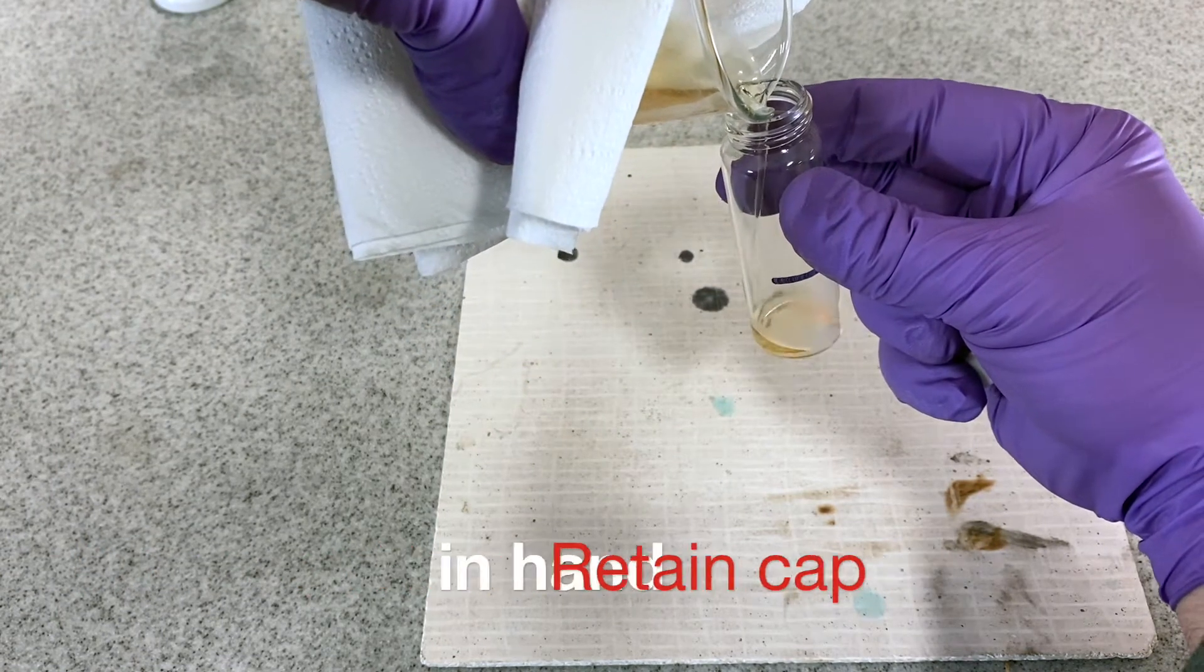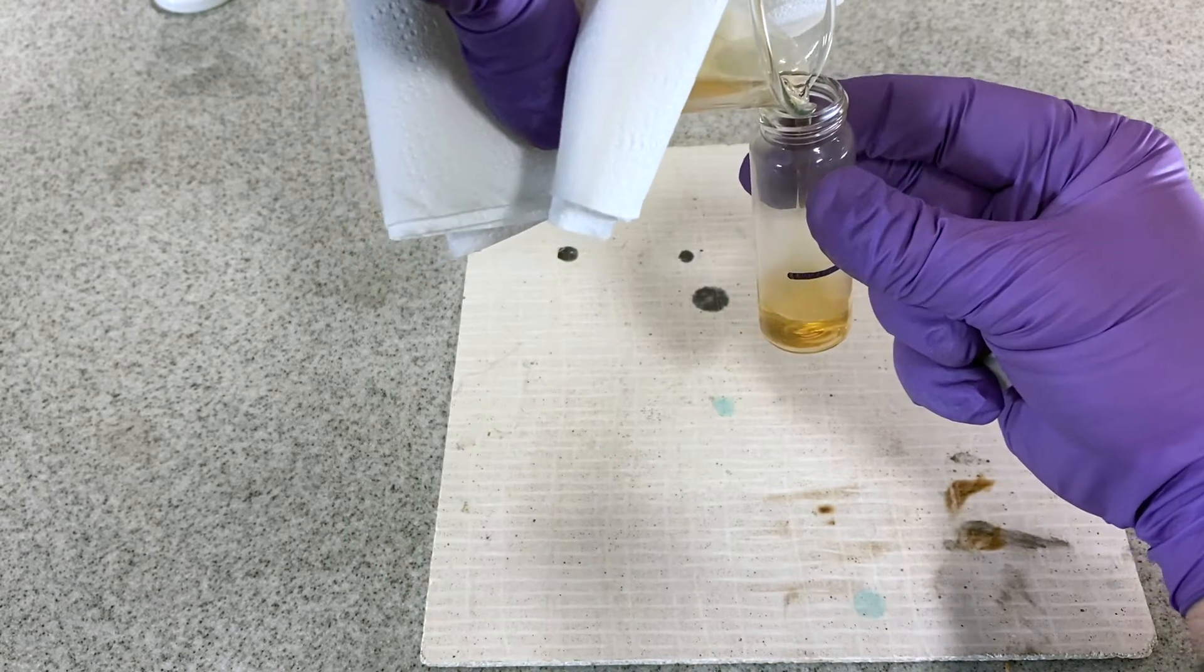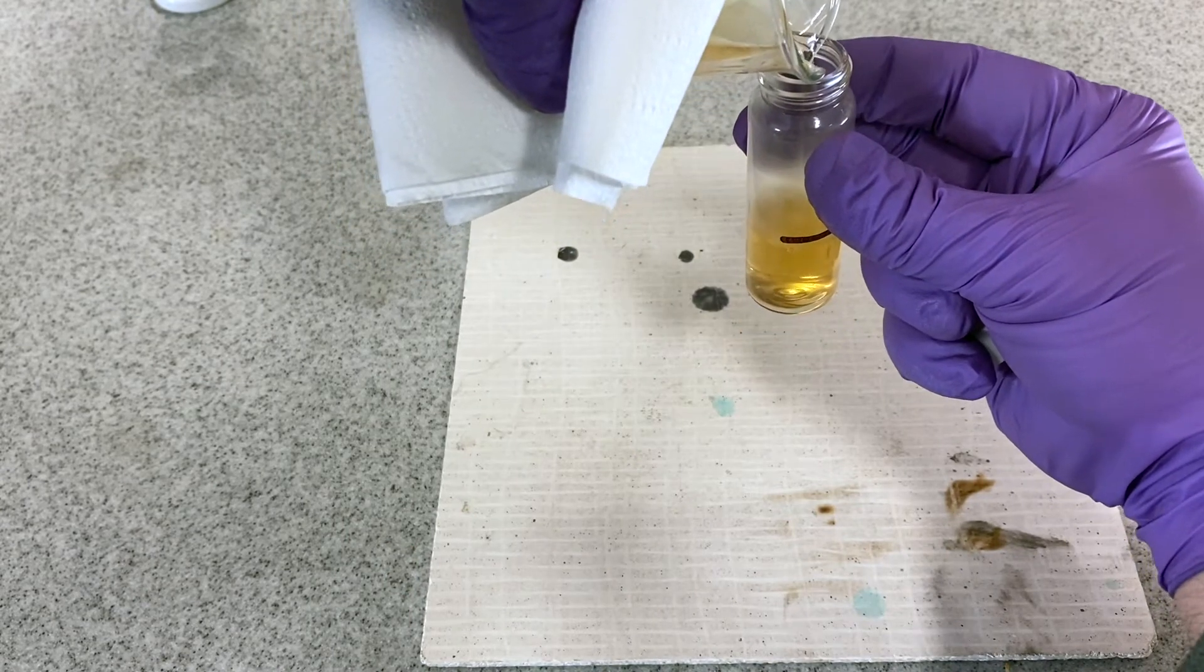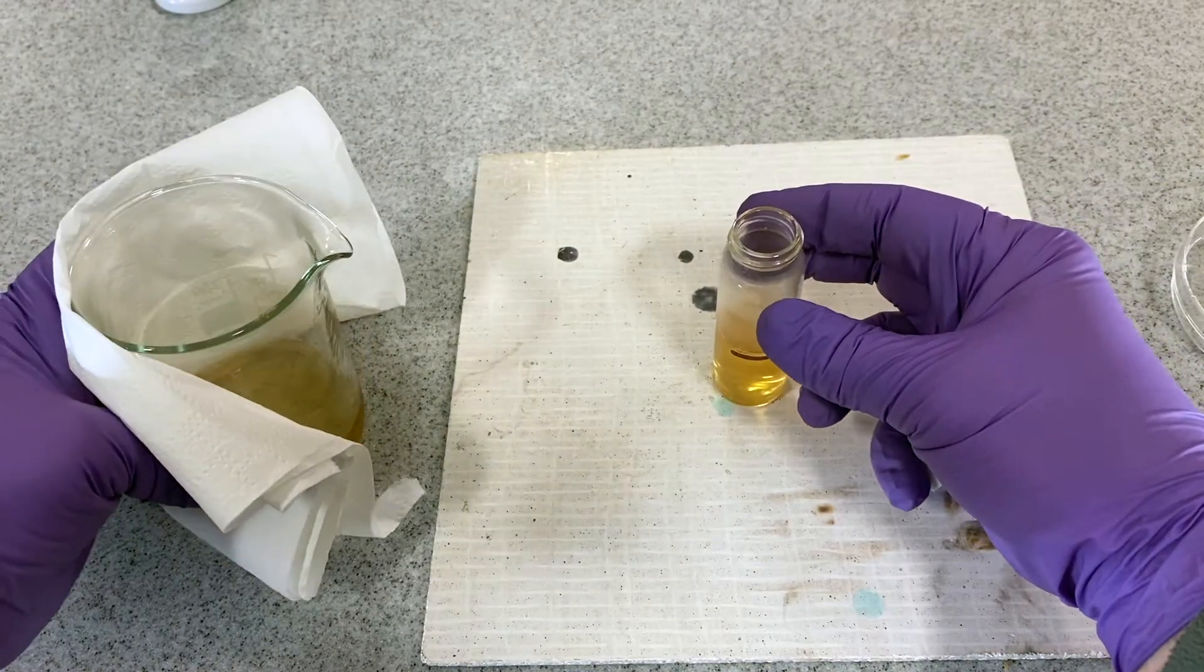Some of the agar medium can be poured into the sample bottle up to the measured fill line. This can be done directly from the beaker.